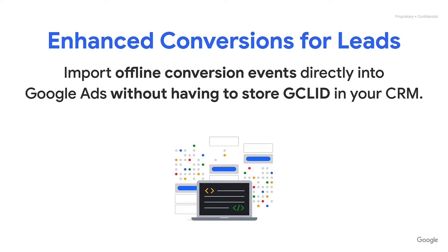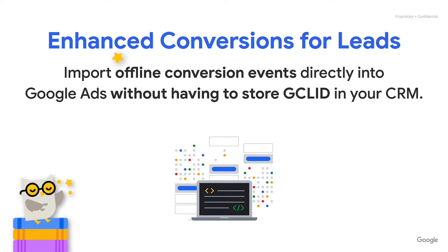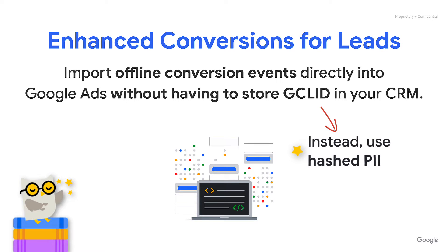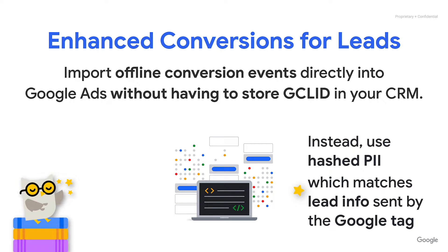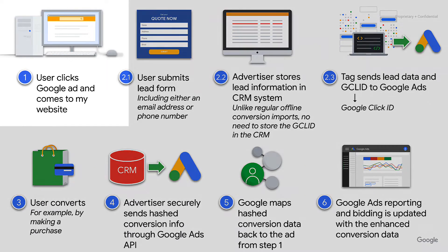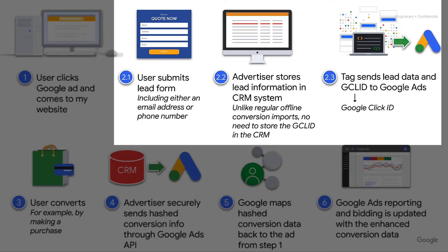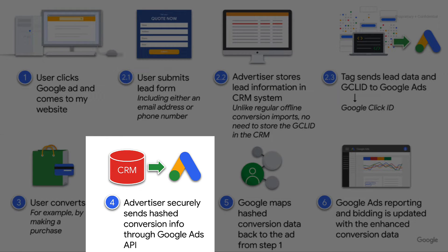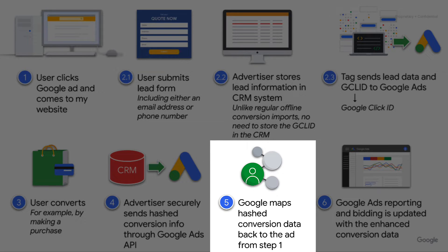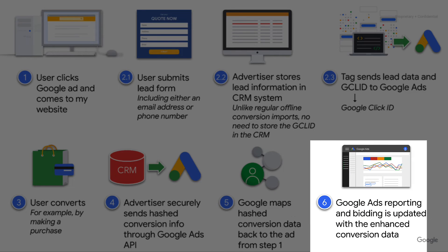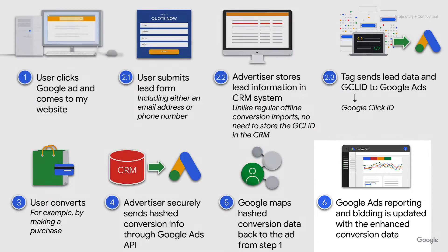Let's briefly recap how enhanced conversions for leads works to get a picture of where the code example fits in. With enhanced conversions for leads, you can import offline or untrackable conversions directly into Google Ads without needing to store the GCLID, or Google Click ID. Your conversions are keyed by hashed PII instead of GCLID, and then matched with the lead information that was sent by the Google tag when the user became a lead. After the user comes to your website by clicking on a Google Ad, their information is stored in your CRM and in Google Ads after they submit the lead form on your site. Later, when the user converts, you normalize and hash their identifiers, like their email address and phone number, and securely send them to the Google Ads API. This is the piece that our code example covers. Google Ads then tries to match that PII to the information and the GCLID that was stored when the user submitted the lead form. If Google finds a match, reporting and bidding is updated with the enhanced conversion data.